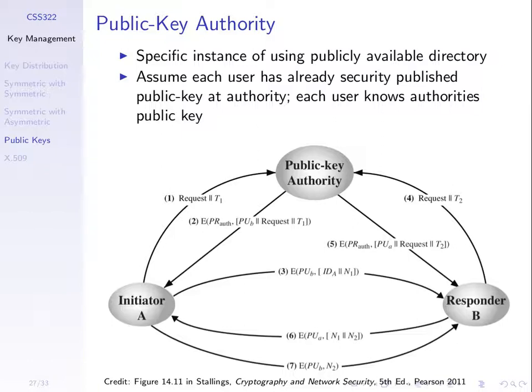One problem with this approach is that every time A wants to communicate with a new entity, we go through these steps of contacting the authority and getting the key, and the receiver also contacts the authority to get the key. Imagine there are thousands of entities in the network all needing to communicate with each other — there are many contacts to the authority and it becomes overloaded, a bottleneck. Many packets are sent to the authority which must respond quickly; if it cannot respond, A and B cannot communicate. The next scheme improves mainly on performance, not security.